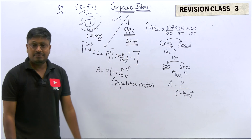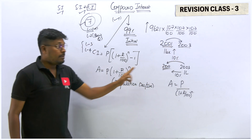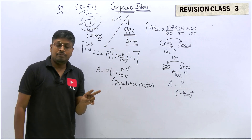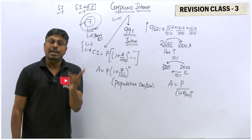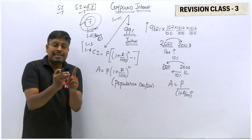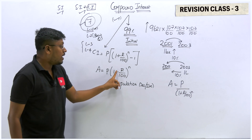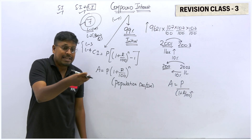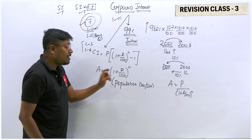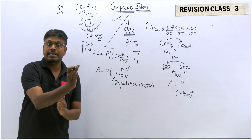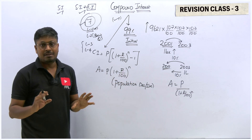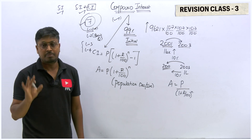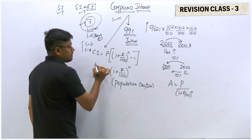If it is after n years, we use the multiplication formula. If it is before n years (going backward), we use the same formula but divide P by (1 + r/100)^n — that is the only change. Additionally, if the population is increasing by 10% or 20%, we substitute positive r. If the population is decreasing by 10% or 20%, we substitute negative r. Plus for increase, minus for decrease — the formula structure remains the same.